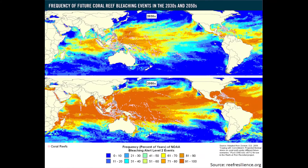I truly do not understand how data like this doesn't instill in everybody that sees it a powerful desire to take drastic, immediate action to combat climate change. And here's something that I find extremely frustrating about climate change deniers — they'll constantly use the phrase 'climate change alarmism,' yet data like this makes absolutely clear that very serious global consequences of climate change will materialize in just a matter of decades. There is nothing irrational or silly about becoming alarmed at things that are extremely alarming.